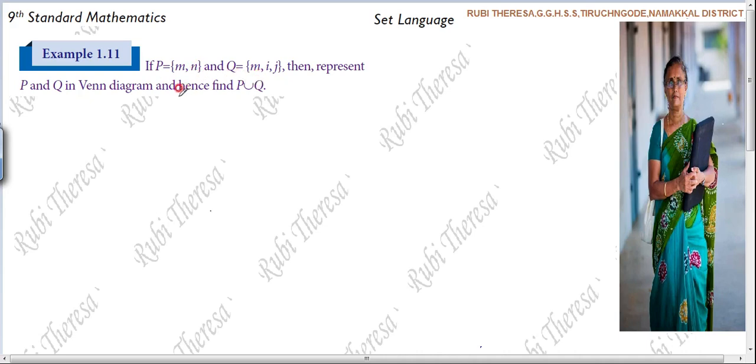So you have to find out the answer with the help of a Venn diagram. Because they asked you to represent P and Q in Venn diagram and hence find P union Q. So first you have to find out what type of sets are these two. Whether it is overlapping or disjoint. Is there any common element in P and Q? Yes.